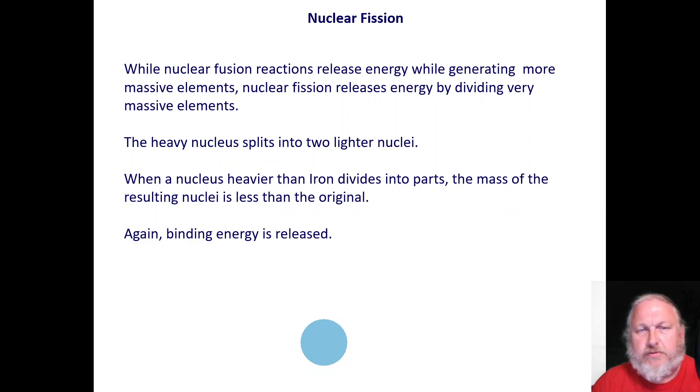nuclear fission releases energy when it divides very massive elements. So the heavy nucleus will split into two lighter nuclei. And when the nucleus, the heavier nucleus, any nucleus heavier than iron will divide into parts, the mass of the resulting nuclei is less than the original. That's where the power of fission comes from. This is the binding energy that is released.